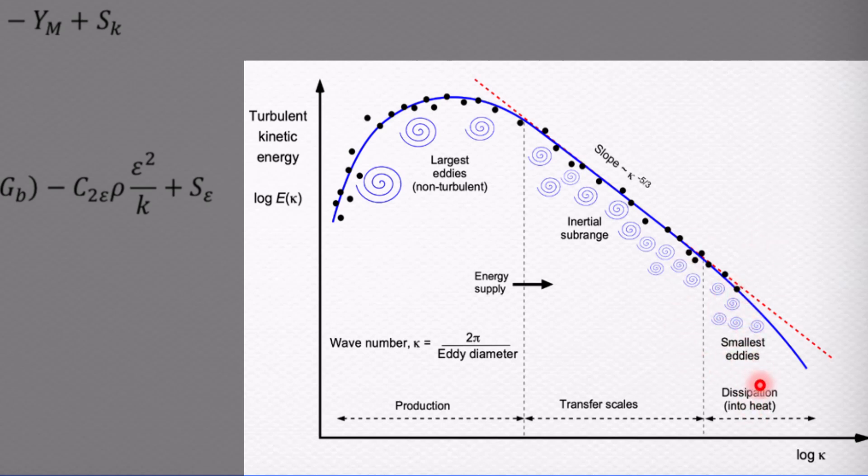Smaller eddies have larger wave numbers, while large eddies have small wave numbers. And in the inertial sub-range, the slope of the line is kappa to the power of minus five-thirds.